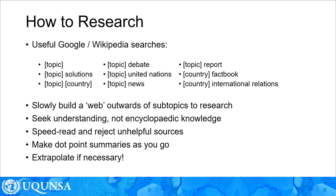I've written down a couple of basic search terms you can use to get started. Where you see 'topic' or 'country' in brackets, simply put in your topic or allocated country instead. Notice that the very first recommended search term is simply your topic. If the MUN is about terrorism, for example, there is absolutely no shame in heading straight to the Wikipedia page for terrorism and starting from basics.